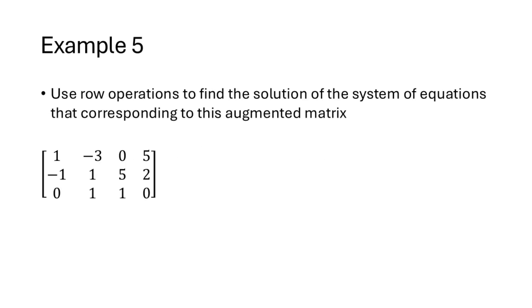Let's use our row operations to find the solution of the system of equations corresponding to this augmented matrix. The numbers in this rectangular grid represent coefficients of equations. For example, the first row has entries 1, negative 3, 0, 5 — representing the equation x1 minus 3x2 plus 0x3 equals 5. This represents a system of equations, and we want to use our row operations to ultimately find its solution.